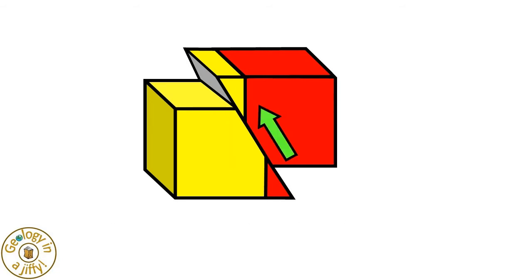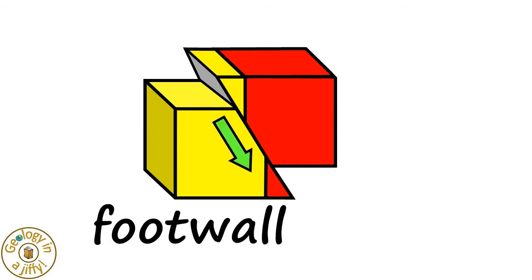The block that moves upwards is called the hanging wall and the block that moves downwards is called the foot wall.